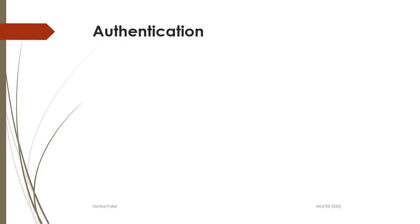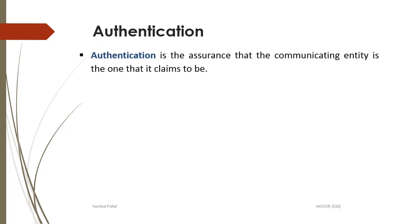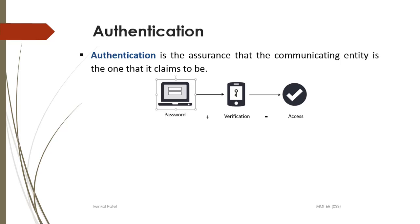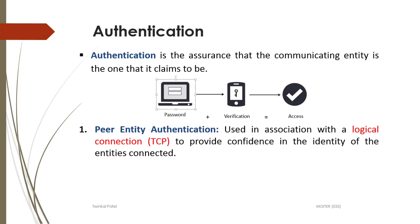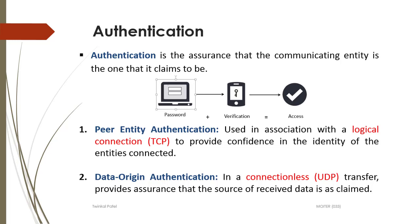The first security service is authentication. Authentication service is the assurance that the communicating entity is one that it claims to be. For example, if we are accessing our Gmail account from an unknown PC or laptop, Gmail will ask us for a password as well as a verification code sent to our registered mobile number. Then only Gmail will grant access to our account. Authentication subtypes are peer entity authentication, which is the connection-oriented authentication service, and data origin authentication, which provides assurance that the source of the received data is as claimed.